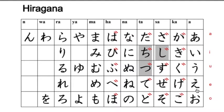In the 'e' row: e, ke, se, te, ne, he, me, re. And in the 'o' row: o, ko, so, to, no, ho, mo, yo, ro, and wo.